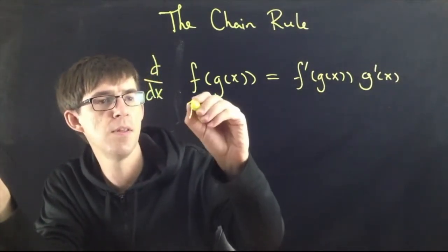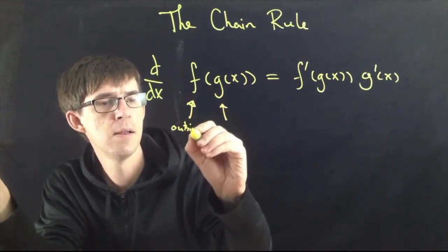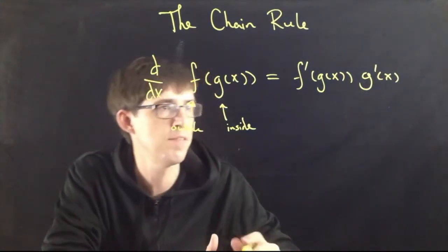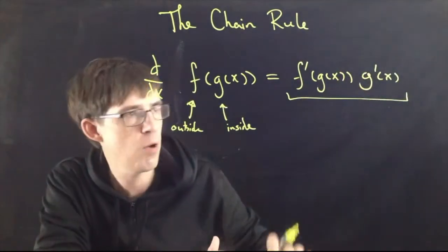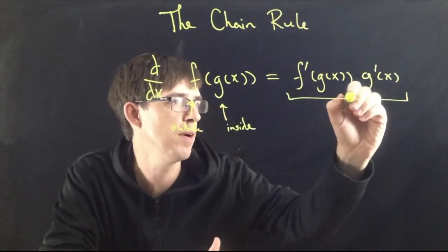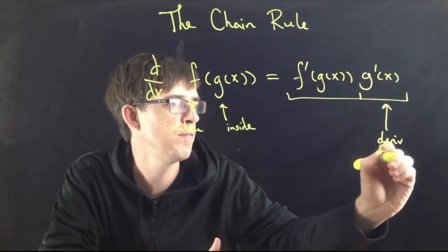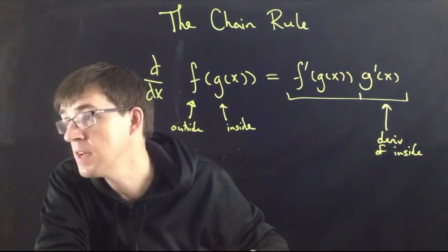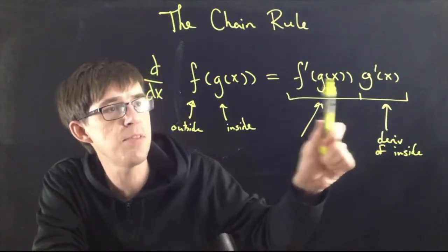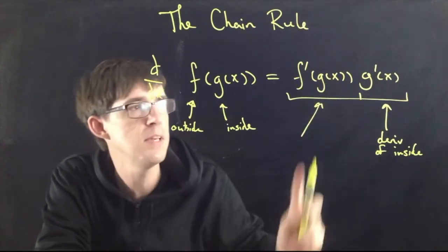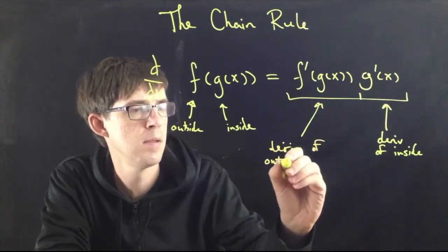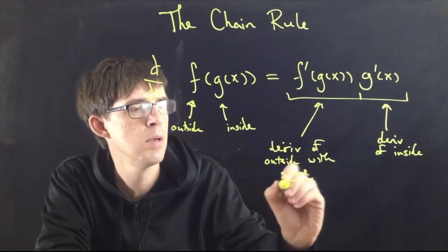The way I remember the chain rule is as a slogan: F is the outside function and G is the inside function. The second part is the derivative of the inside. The first part is the derivative of the outside function, but you keep the same thing on the inside — derivative of the outside with the same inside. Then multiply by the derivative of the inside.